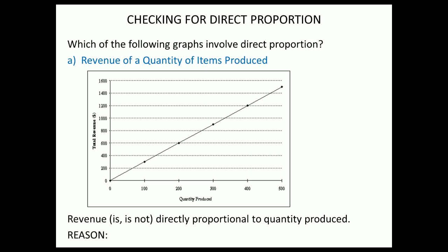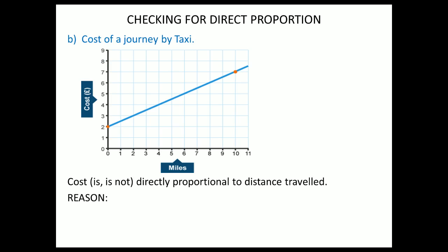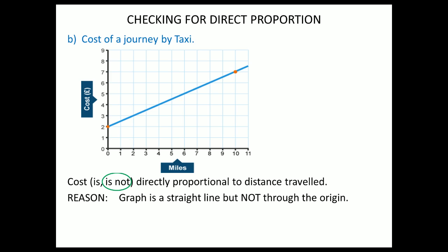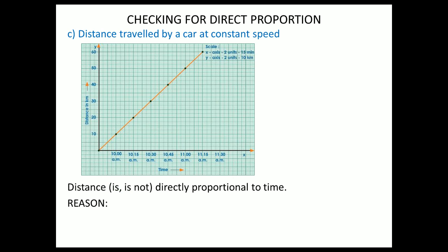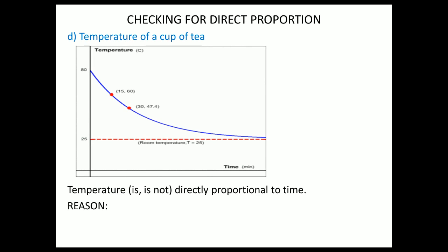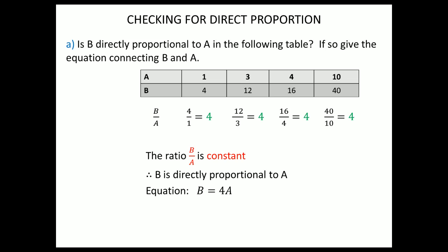Which of the following graphs involve direct proportion? Revenue is directly proportional to quantity produced — it is, because we have a straight line through the origin. Cost directly proportional to distance traveled — it is not. It is a straight line but it doesn't go through the origin. Distance traveled by a car at constant speed — distance is directly proportional to time because it's a straight line through the origin.